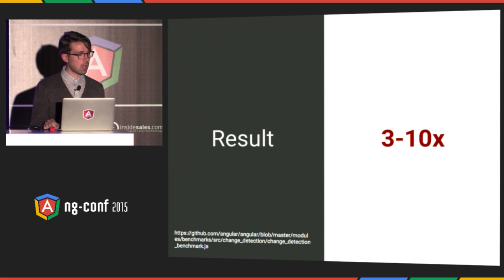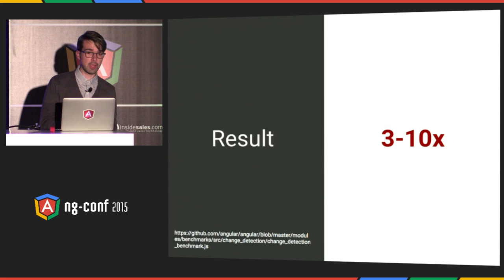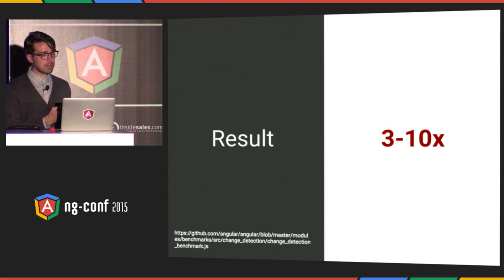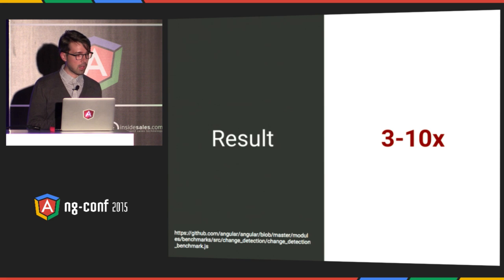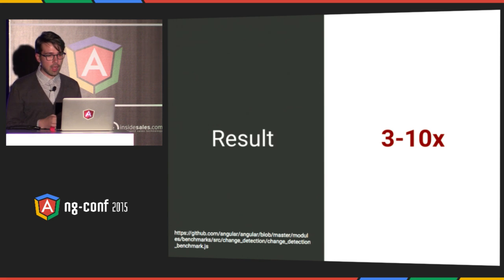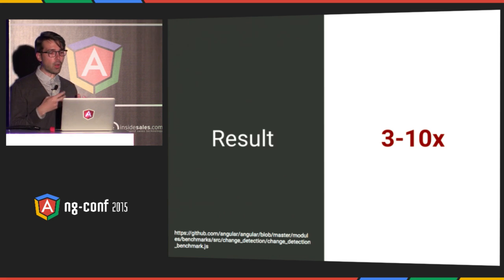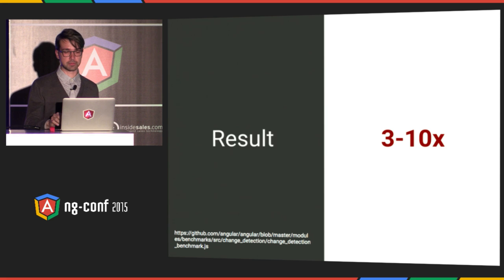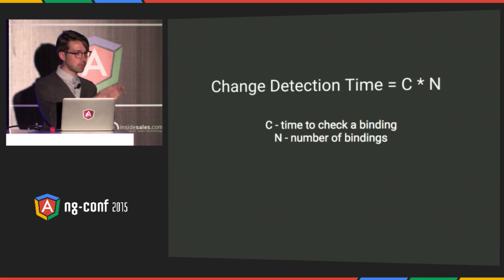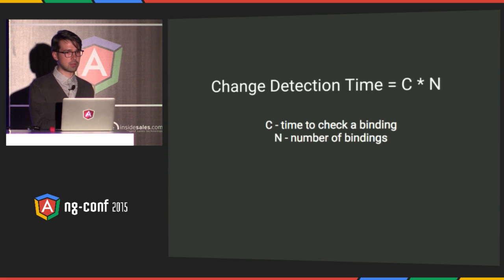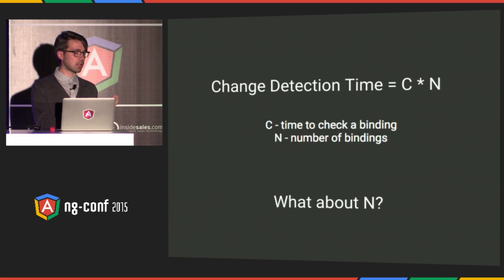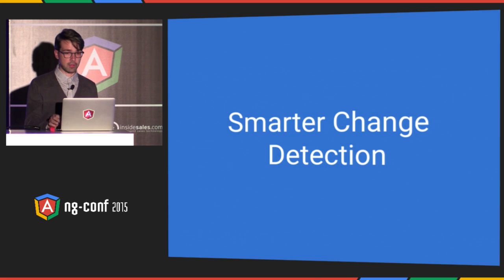The performance of Angular 1 is actually good enough for the majority of apps. And as you can see, Angular 2 is quite a bit faster. But some applications may require even better performance, for example if you're running on mobile. Let's see how we enable that in Angular 2. We already know the constant C is much smaller. But what about N — can we be smarter about what we check? And the answer is yes, we can.